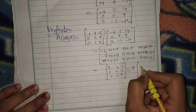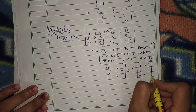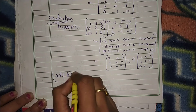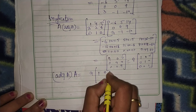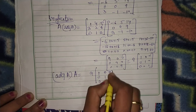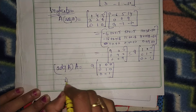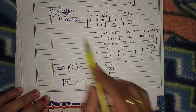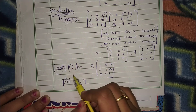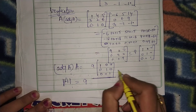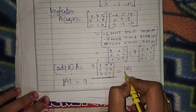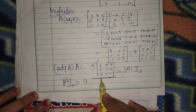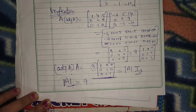So this is 9 times [[1,0,0],[0,1,0],[0,0,1]]. Same way adjoint of A into A also equals 9 times I3. Now what is determinant of A? When you compute it, determinant of A = 9. So A into adjoint of A equals adjoint of A into A equals determinant of A times I3 — the theorem is verified.